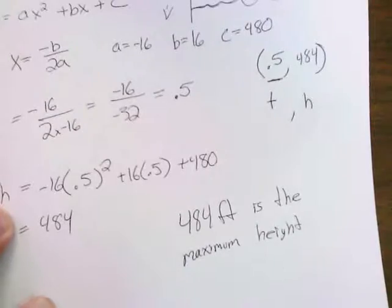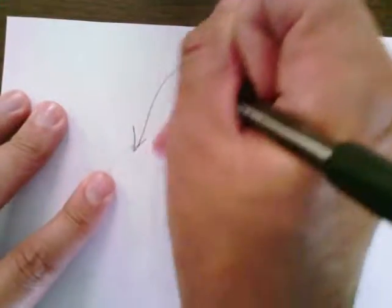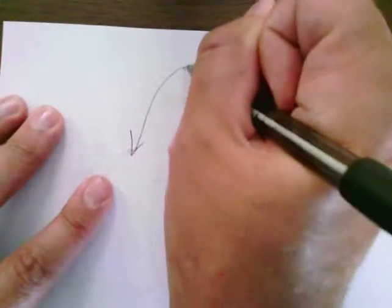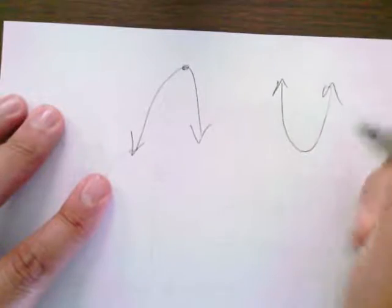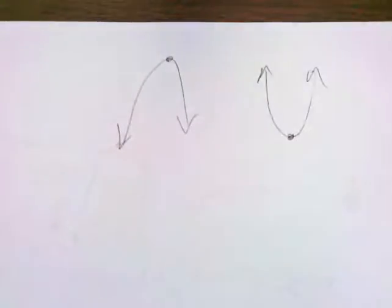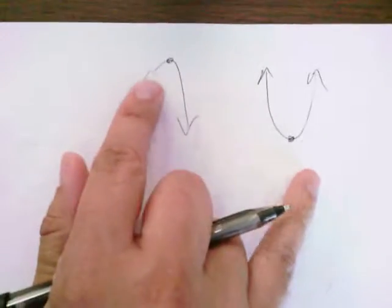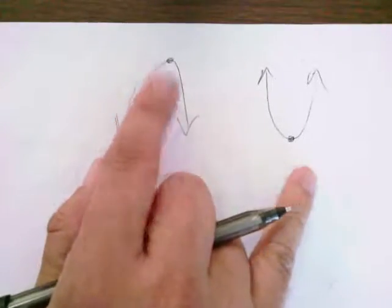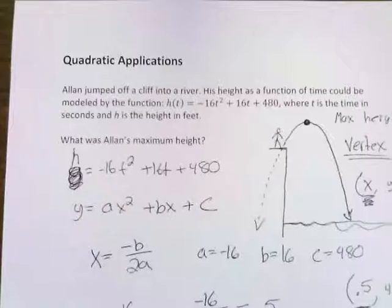And that is a quadratic application. Now, I will tell you with these problems, it can change from scenario to scenario. Sometimes it could be maximums and sometimes it can be minimums. It could be either or, so you just look out for it. But no matter what, you're usually dealing with a vertex. So again, that was quadratic applications.